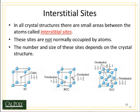If we look at BCC, there are octahedral sites on the faces and tetrahedral sites just in the interior of the unit cell. For an FCC crystal structure, there are tetrahedral sites just in the interior of the unit cell, but also octahedral sites at every edge and also in the body center of the unit cell.